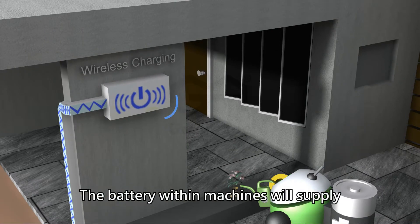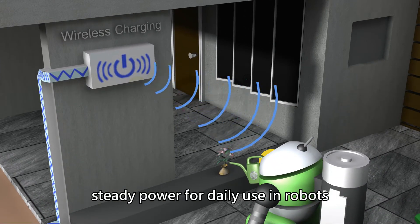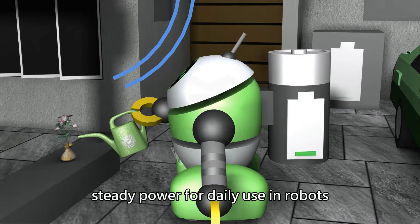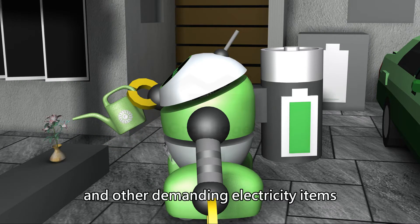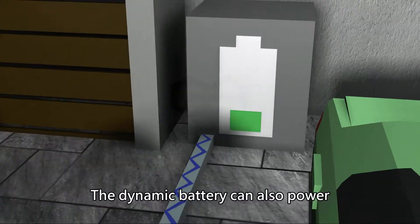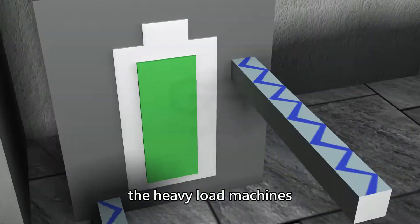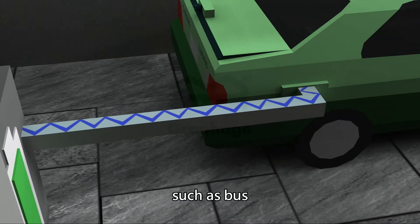The battery within machines will supply steady power for daily use in robots, electric cars, and other demanding electricity items. The dynamic battery can also power heavy load machines, such as a bus.